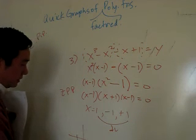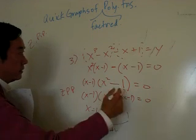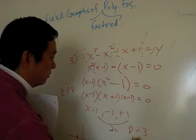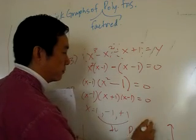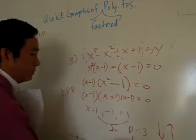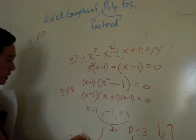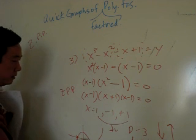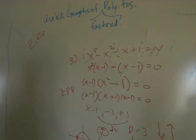Graphing it out: there's a single root at negative 1 and a double root at positive 1. The degree is 3 with a positive leading coefficient, so the right end goes up and the left end goes down. Starting from the left, the graph goes through negative 1 (single root), bounces back up at positive 1 (double root), then continues down. The end behavior fits our model. Good luck!